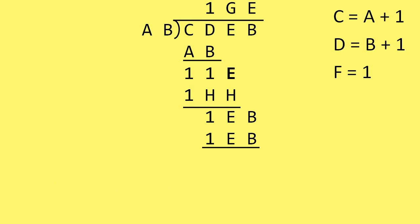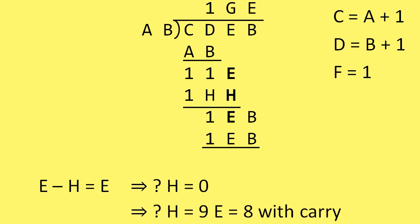We would start subtracting here. We would take E minus H, and that would give us E. So does that imply that H is equal to 0? Maybe. I can think of one other possibility. What if H was 9 and E was 8? Then there would be a carry from the next column over. So 18 minus 9 could really be 9. Let's not declare H to be 0 just yet.